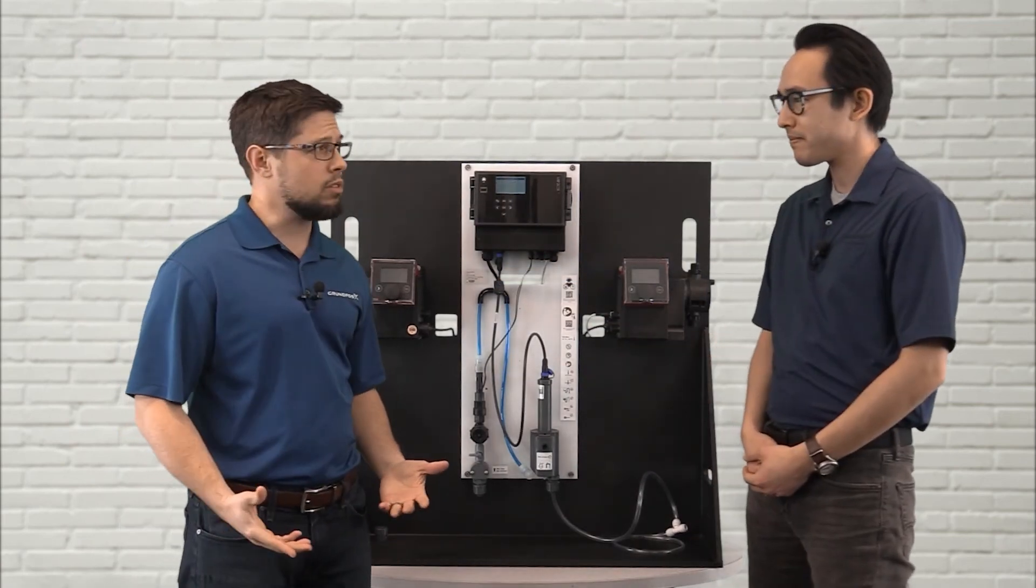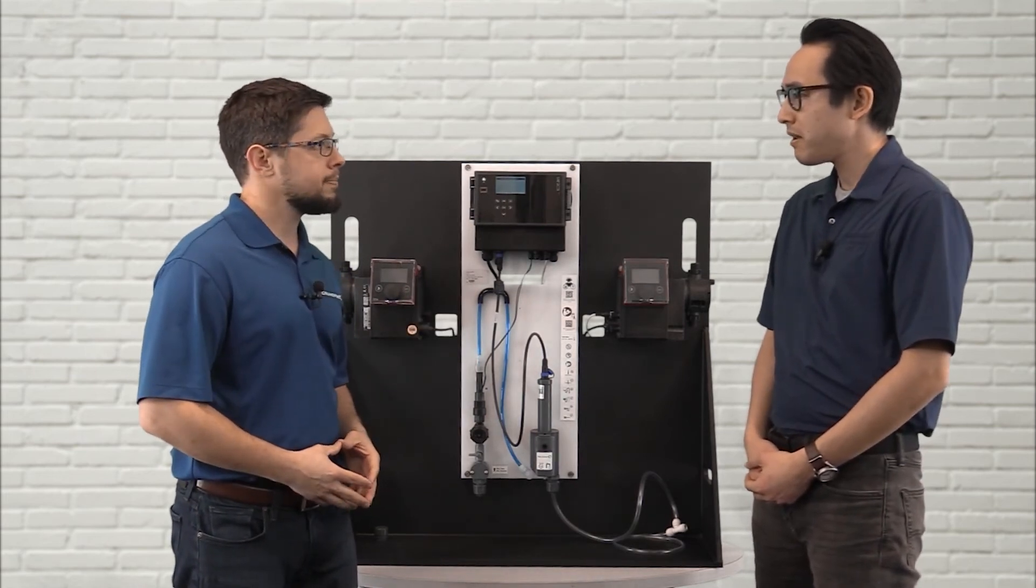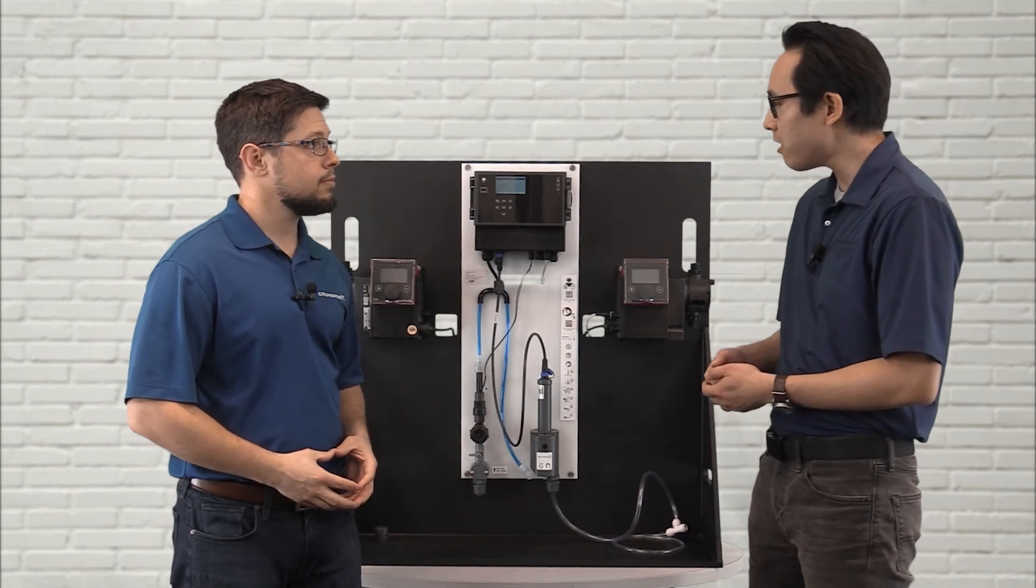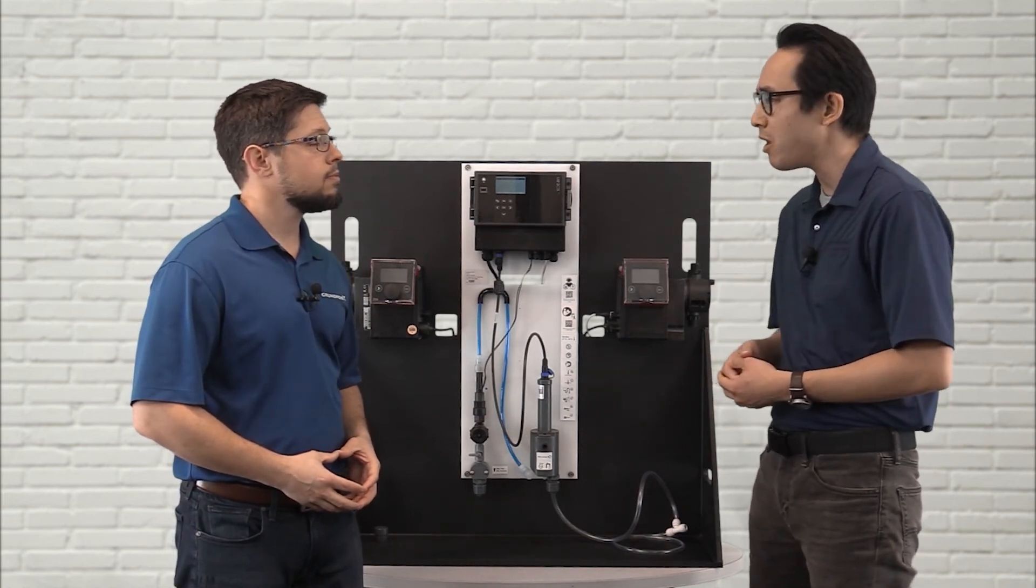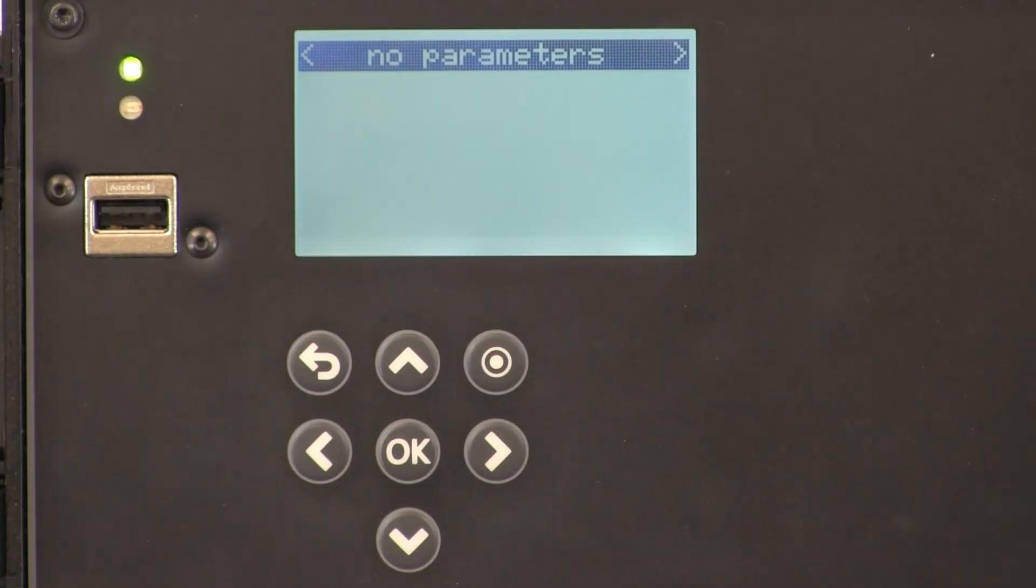Now that we have the sensor installed, how do I get it to start communicating with the DID controller? Let me give you an overview of the different screens on the DID controller and how to load the sensor. The first screen that will show is the parameter screen, but as you can see, there's no parameters shown. So we want to go to the status screen.